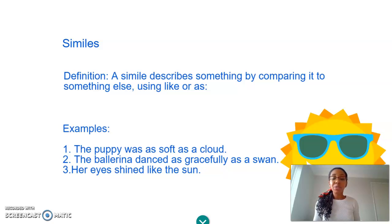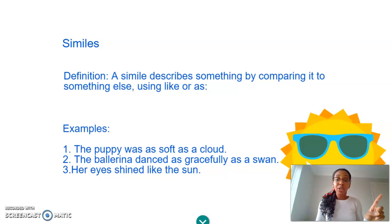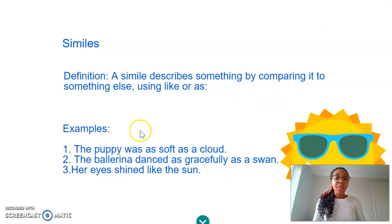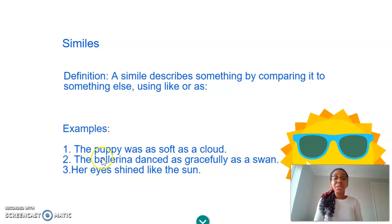So first of all, we'll look at similes. So what's a simile? A simile is when something is described by comparing it to something else using the words 'like' or 'as'. So let's see that in practice. Here are some examples. The first example: the puppy was as soft as a cloud. So can you imagine that puppy? It's so soft, it's like a cloud — probably big and fluffy. That's an example of a simile because you're talking about the puppy and you're comparing it to a cloud using the word 'as'.